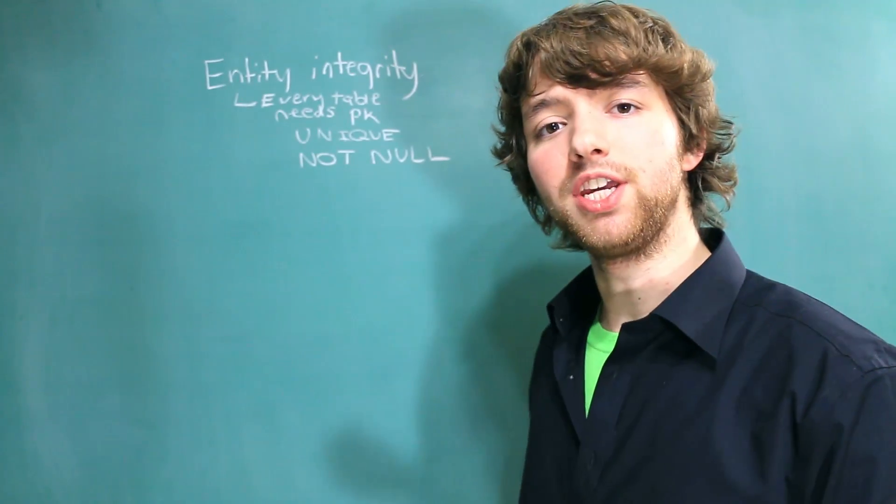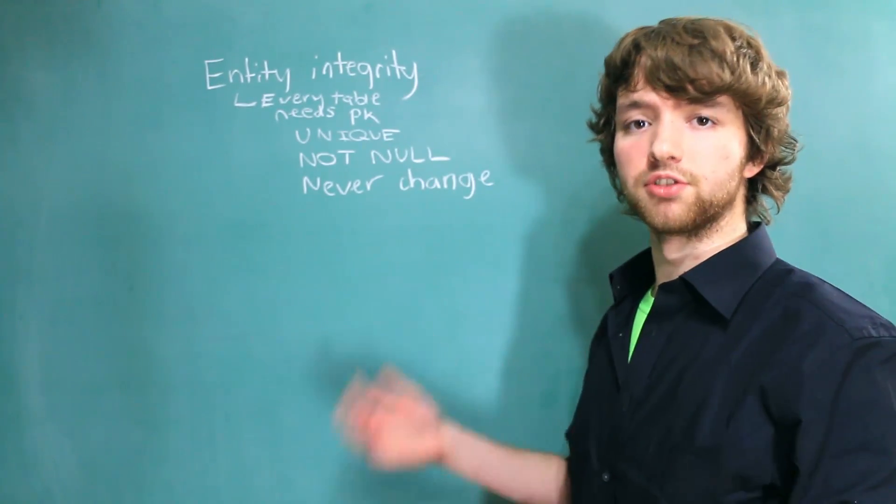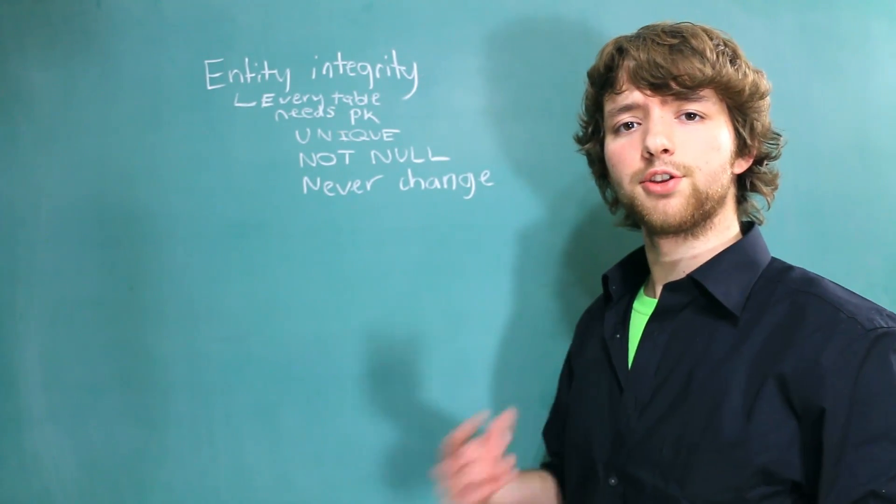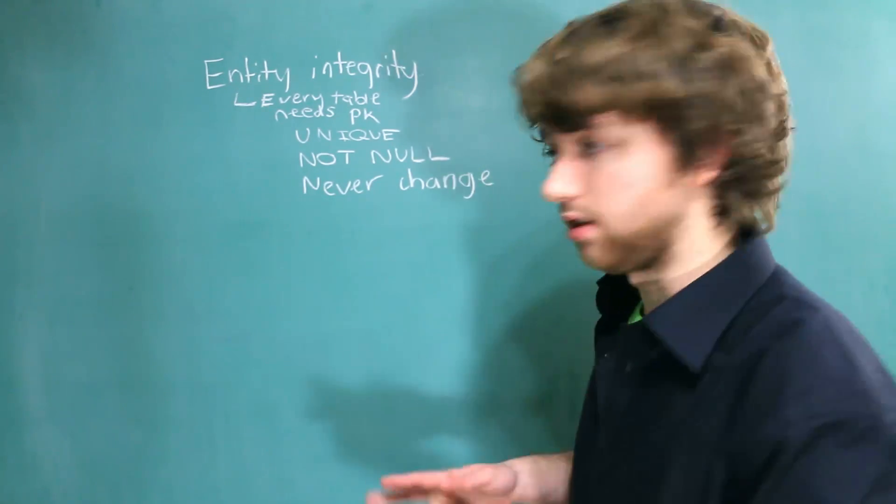In addition to this, a primary key should never change. These are the three things that need to happen for something to be a primary key. Now there's actually two classifications of primary keys: surrogate keys and natural keys.